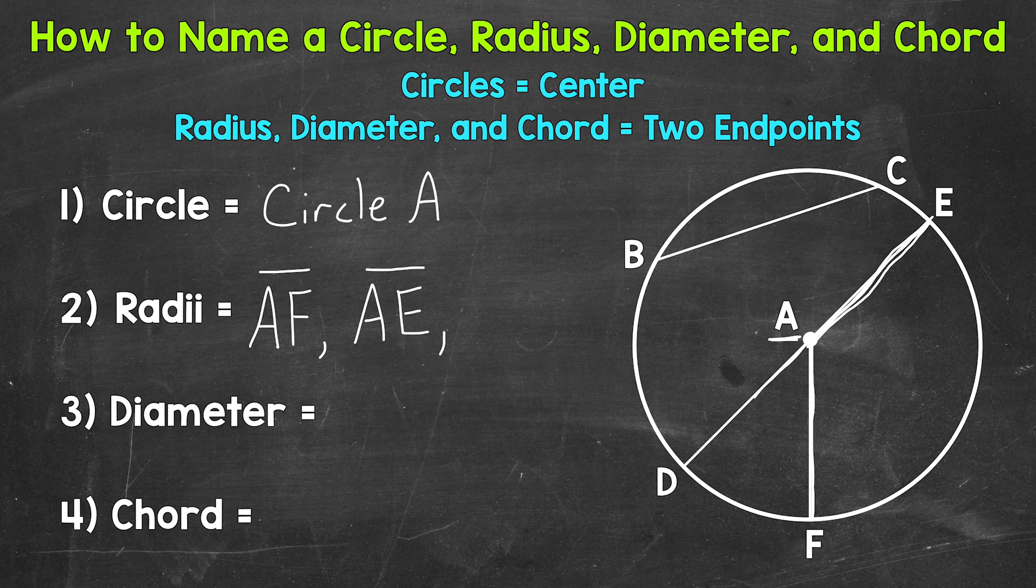The last radius example here would be the center to point D. Let's write our two endpoints, A and D, and then the line segment symbol above those two endpoints. One more thing to keep in mind about the radii of this circle and any circle: they are all congruent, all the same length, because all points on a circle are the same exact distance from the center.